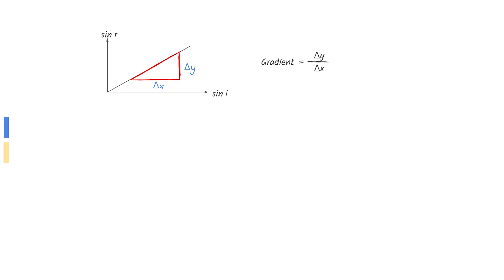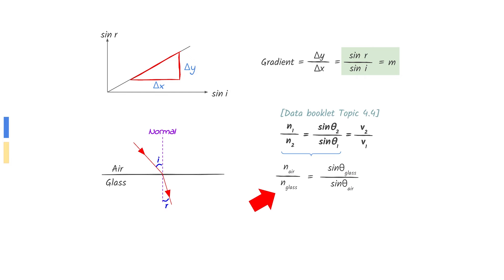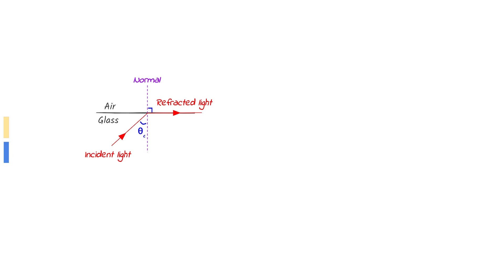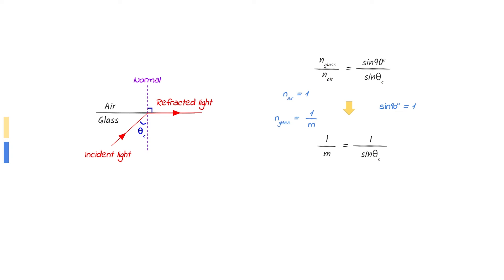First, let's have a look at the graph. Gradient is Y over X, where Y is sine R and X is sine I. The question tells us that the gradient is M. The ray enters the glass from the air. Use the equation given in the data booklet to derive an equation between the refractive index and the angles. The angle in the glass is R and the angle in the air is I. Sine R over sine I is M. The refractive index in the air is 1. Rearrange to find the refractive index of glass in terms of M. Now let's focus on the critical angle. A critical angle occurs when the ray from a more dense medium — in this case the glass — refracts at 90 degrees to a less dense medium — in this case the air. The angle in the air is 90 degrees and the angle in the glass is the critical angle. Rearrange to find the critical angle in terms of M.